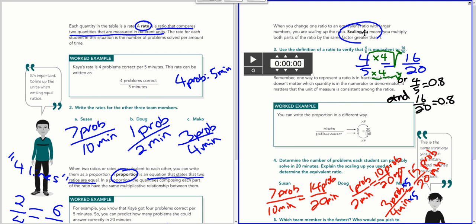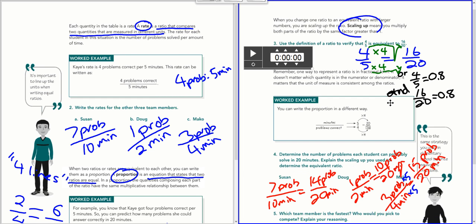Now we're going to scale up, which basically means we're multiplying by the same factor in both situations. Before we get to that, they said use the definition of a ratio to verify that four-fifths is equivalent to 16 over 20. Notice that four-fifths is the same as eight-tenths, and so is 16 over 20.